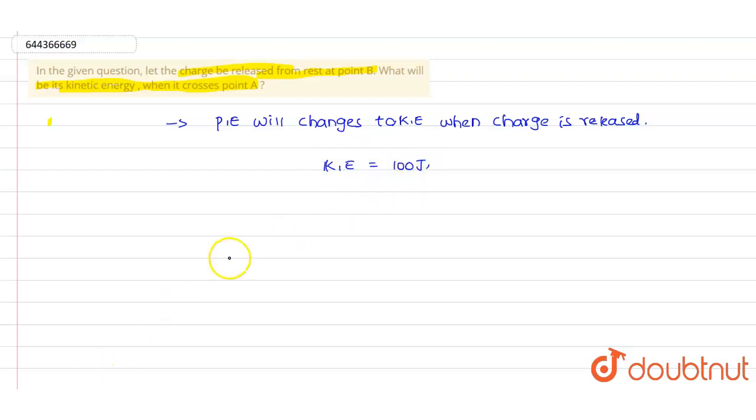So we can write decrease in potential energy. Decrease in potential energy value can be written as potential energy Ub minus Ua, which we can write as 100 joules.